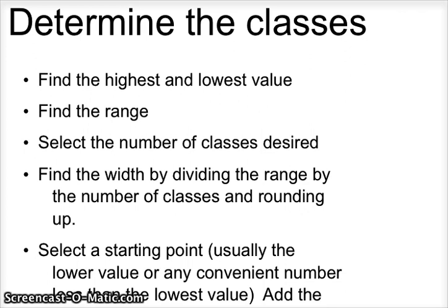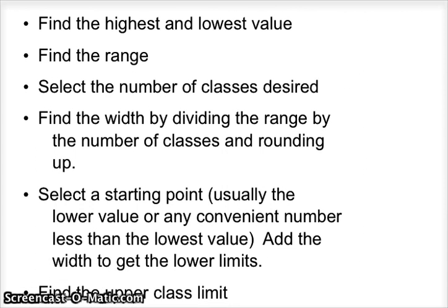First, find the highest and lowest value. Second step, find the range. Third step, select the number of classes you desire. This could be anywhere from 5 to 20, but there's no set rule. You just want to make sure everything is represented clearly. In this case, we're going to use 6 in our example. Find the width by dividing the range by the number of classes and rounding up.